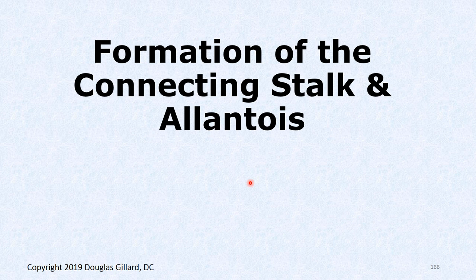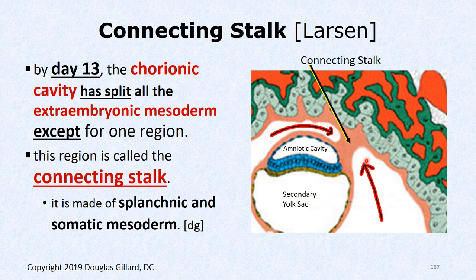Now let's talk about the connecting stalk and allantois. The chorionic cavity pinched everything off except one little isthmus — the connecting stalk. It's made of splanchnic mesoderm in its core and somatic mesoderm on its outer portion. The chorionic cavity doesn't go all the way around — it leaves this stalk, which becomes the future umbilical cord. This is all happening around day 13.